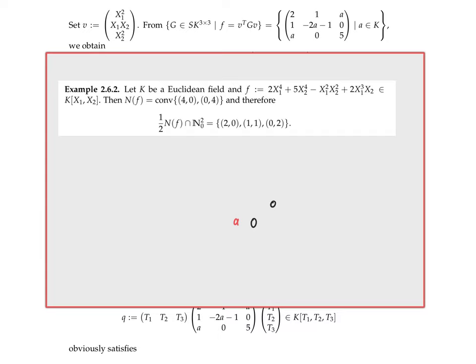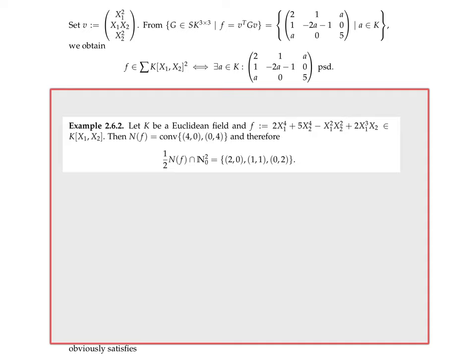The only free parameter is the (1,3) and (3,1) entry, call it A. Then 2A contributes to x_1^2 x_2^2, so the central diagonal entry must be -1 - 2A to make the coefficient equal -1. This gives us the general form of all valid Gram matrices G, parametrized by A.